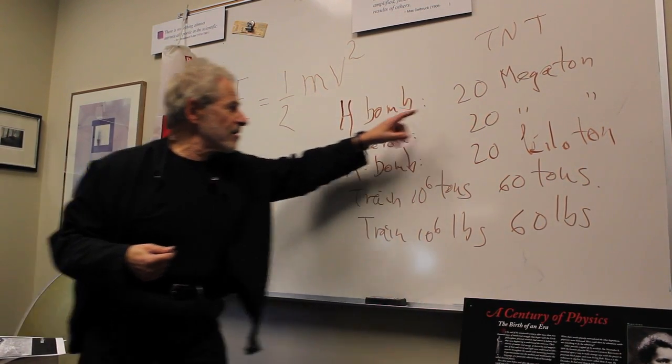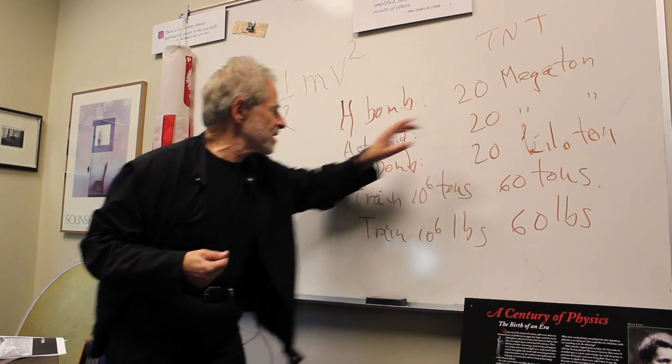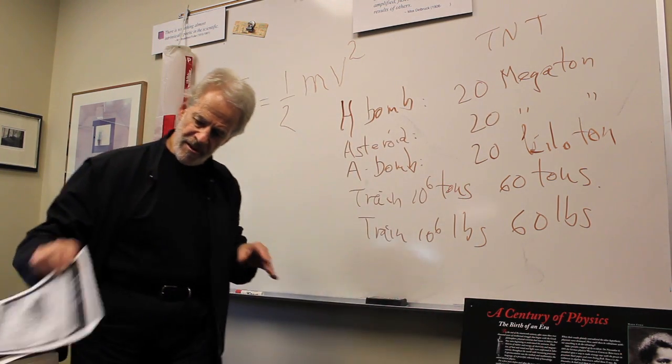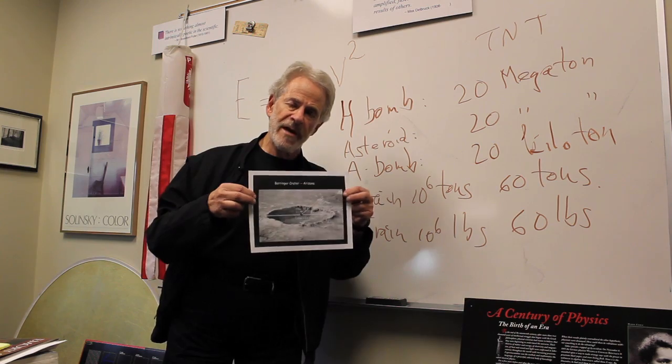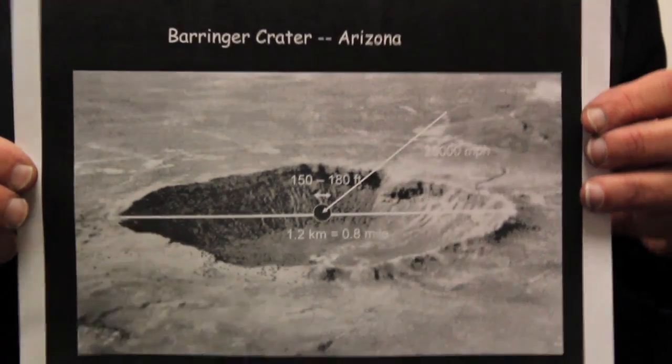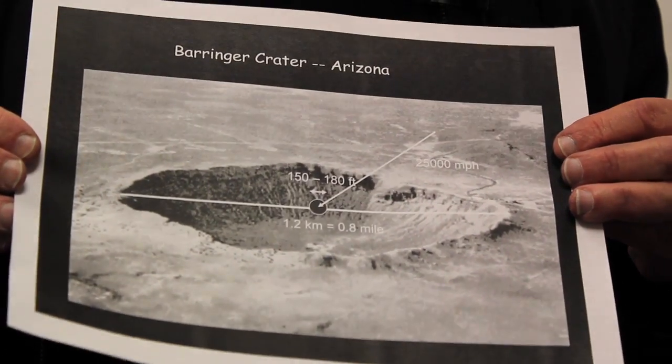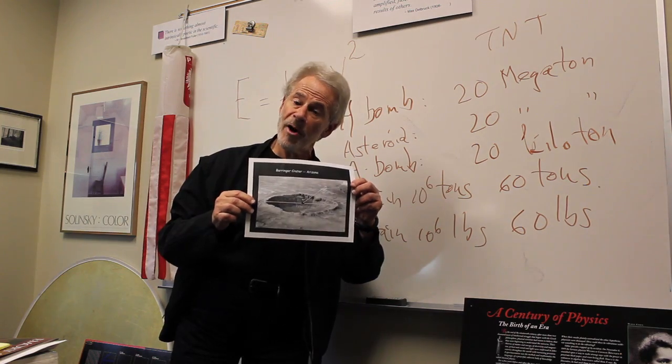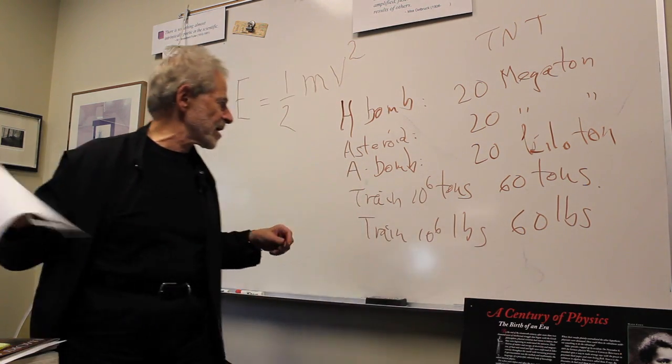H-bomb has an energy as if you exploded 20 million tons of TNT, and an asteroid like this one, which hit the Earth about 50,000 years ago, has about that same amount of energy. You can see it dug the hole almost a mile across, a huge hole. So these are big amounts of energy.